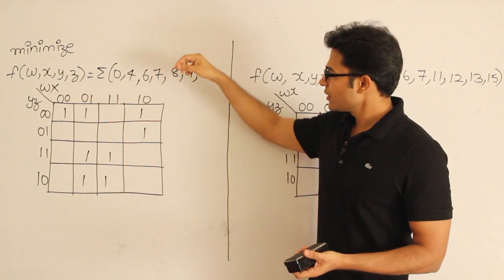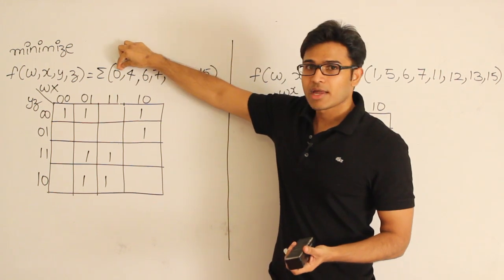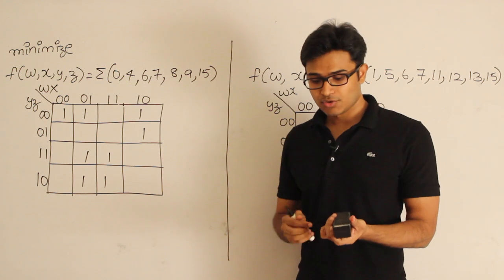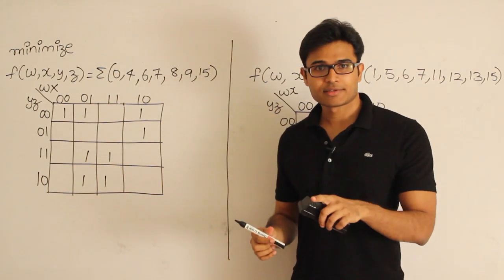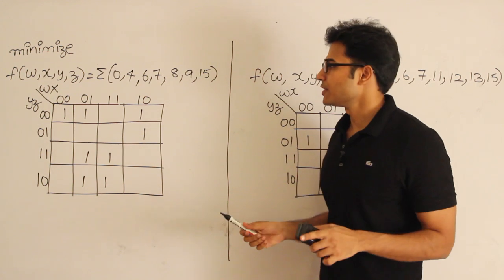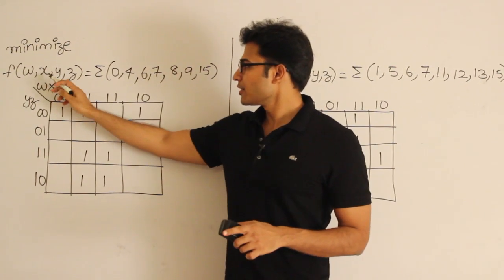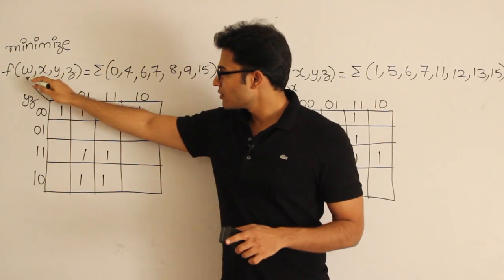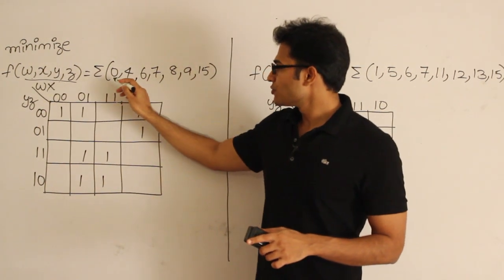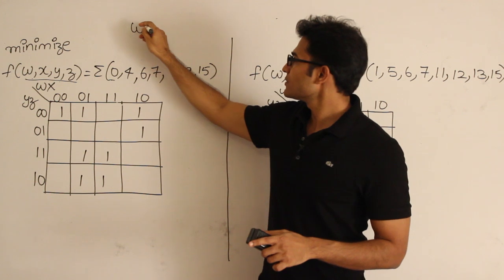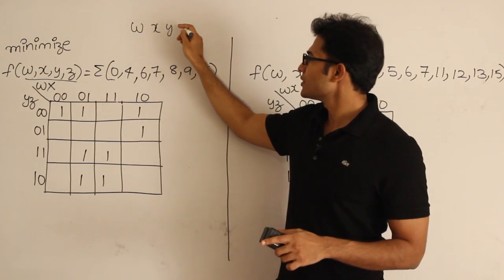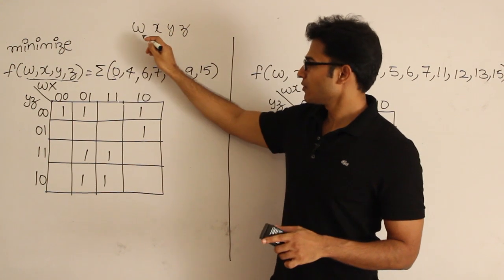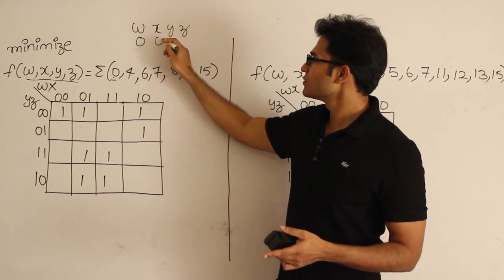After that, you take each minterm and for the corresponding cell you put 1. Before that, you should decide which variable is W, which is X, which is Y, and which is Z. Since we have four variables given in this order, you should interpret it as W X Y Z. So when they say 0, they mean 0000.